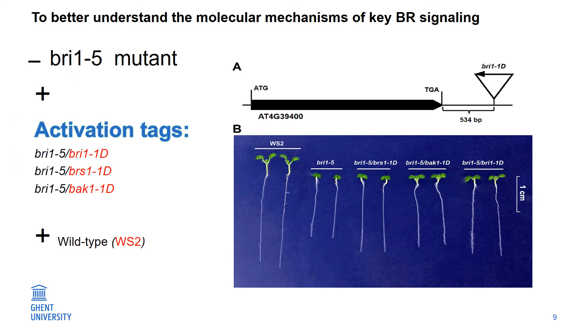We also included three suppressor lines. What is a suppressor line? The suppressor line is double mutated line. Next to the mutation in BRI1, it has overexpression in another gene to cancel out the effect of the BRI1 mutation.